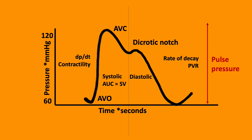Hypovolemia is suggested on the arterial waveform by a narrow waveform with a low dicrotic notch and a peak pressure which varies with IPPV.